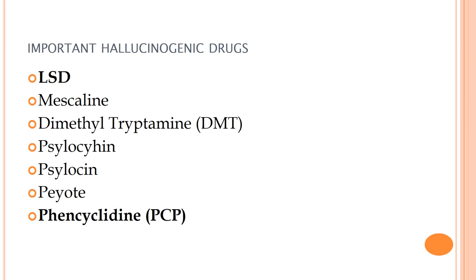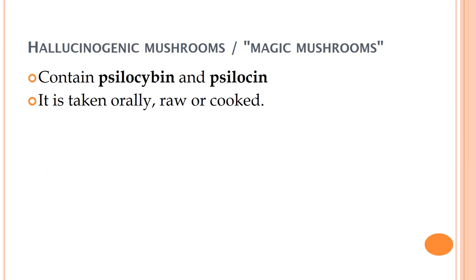Out of all listed hallucinogenic drugs, we need to focus on two: LSD and phencyclidine. The key term to remember is hallucinogens, otherwise known as magic mushrooms. The active particles responsible for hallucinations and other delirium effects are psilocybin and psilocyn. These mushrooms can be taken orally, either cooked or in raw state.